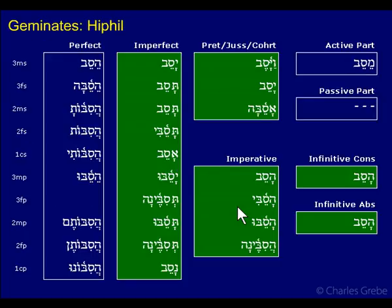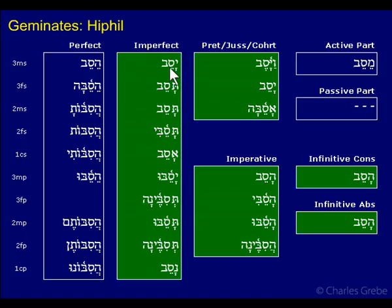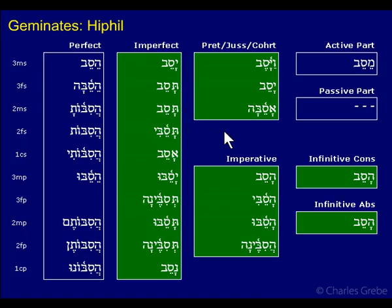Let's look at the prefix forms — here they are in green. We have qamets as the prefix vowel for the Qal and the Hiphil in both hollows and geminates. That's important and will give you a good hint as to what type of verb you have. The theme vowel is tsere — just like the perfect forms — unlike the hollow, which has hiriq yod. So tsere here and here, they all have tsere. In the hollows, they all have hiriq yod as the base theme vowel. So in the geminates you don't have this mark of the Hiphil; there's no hiriq yod to help you.